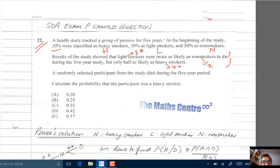Okay, let's read on. A randomly selected participant from the study died during the five-year period. So let's denote the act of dying as D. So D is dying. So you're asked to calculate the probability that the participant was a heavy smoker. So you're asked to find the probability of H given D.